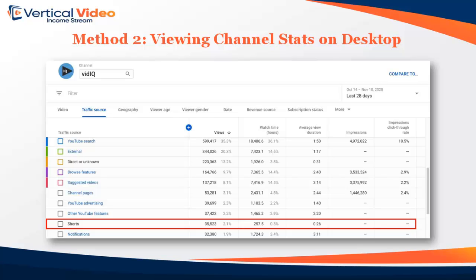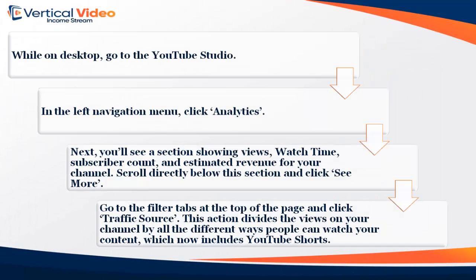Method two: viewing channel stats on desktop. While on desktop, go to the YouTube Studio. In the left navigation menu, click Analytics. You'll see a section showing views, watch time, subscriber count, and estimated revenue for your channel. Scroll directly below this section and click 'See More.' Go to the filter tabs at the top of the page and click 'Traffic Source.' This divides the views on your channel by all the different ways people can watch your content, which now includes YouTube Shorts.